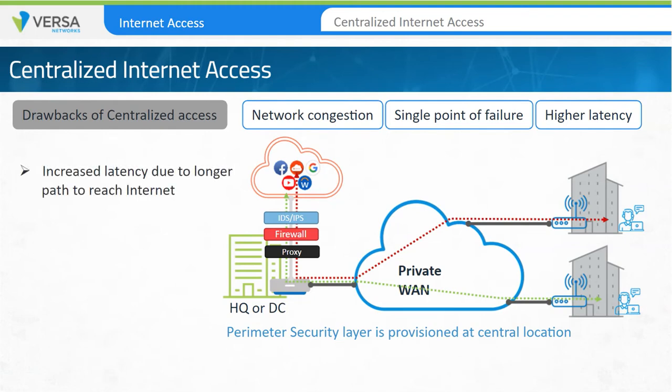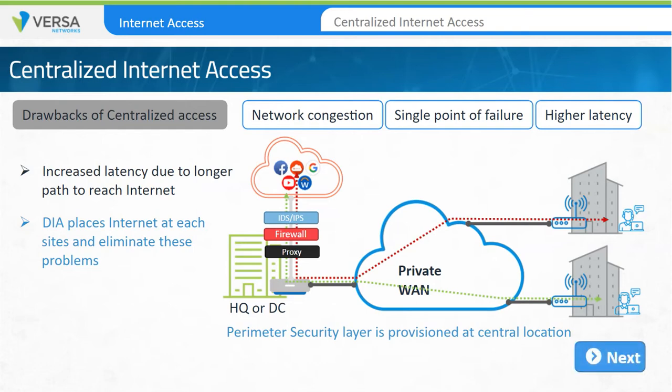Direct internet access places the access to the internet at each remote branch and can reduce or eliminate the three issues we discussed that are associated with centralized internet access.